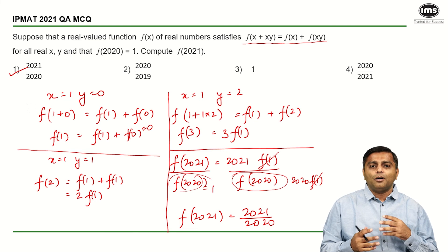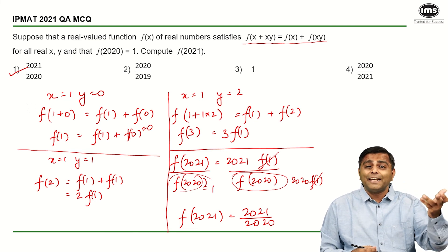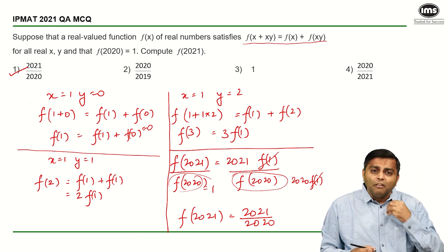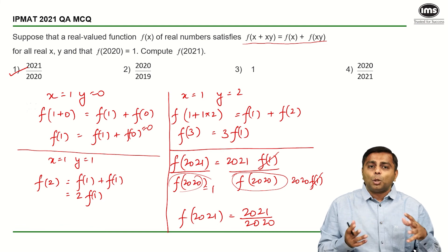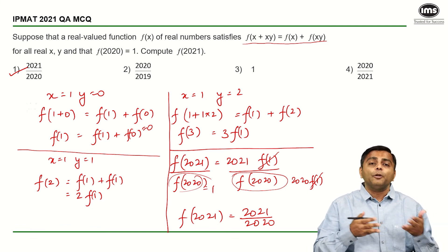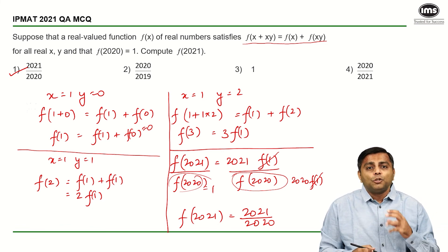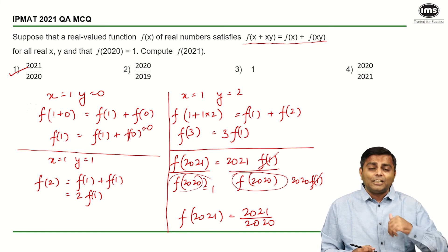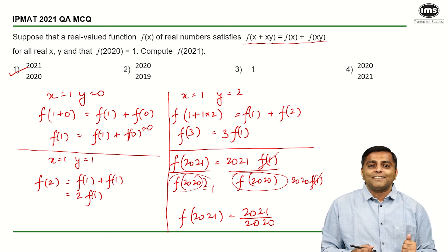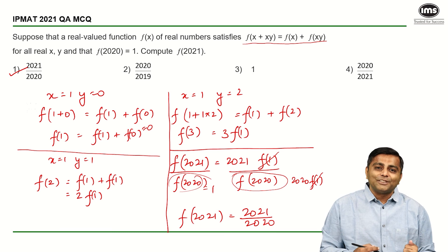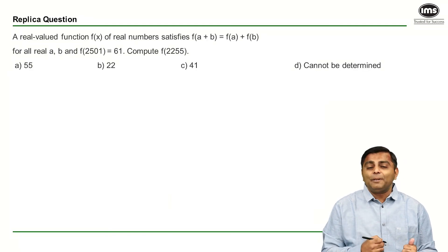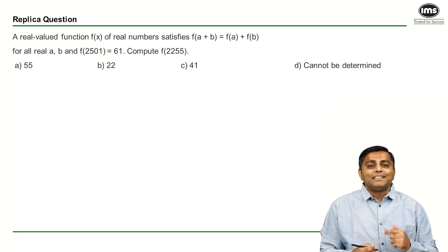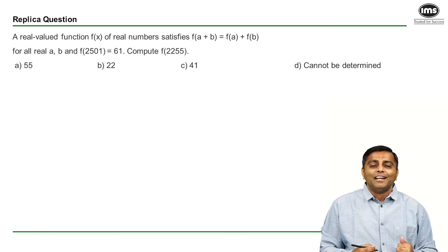In such questions when the values that you have to reach is really high you will always find some pattern. You are not expected to calculate your way up to 2021. You will have to find some pattern and that should help you reach the number that is asked. I hope this was clear. I hope you do get your replica question. Put the answer in the comments and we will see you in the next video. Till then all the best and keep studying.